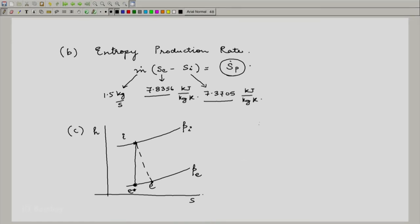Using this s e star, we now find out what must be h e star and you will realize that if I do this, I get at 0.1 mega pascal, the state is still superheated. This is, I should write it as 7.3705 kilo joule per kg kelvin.